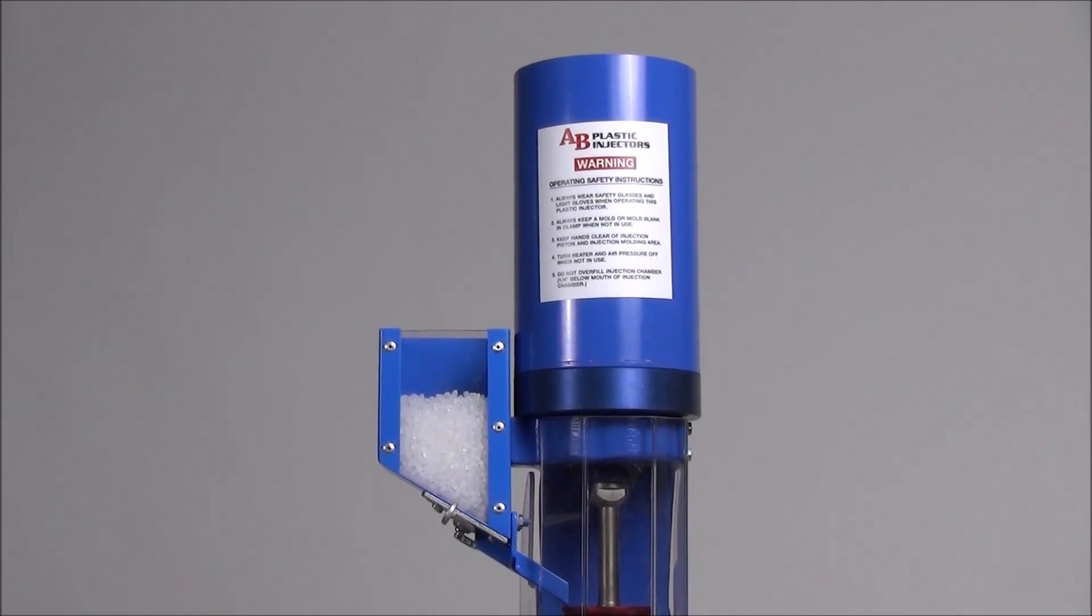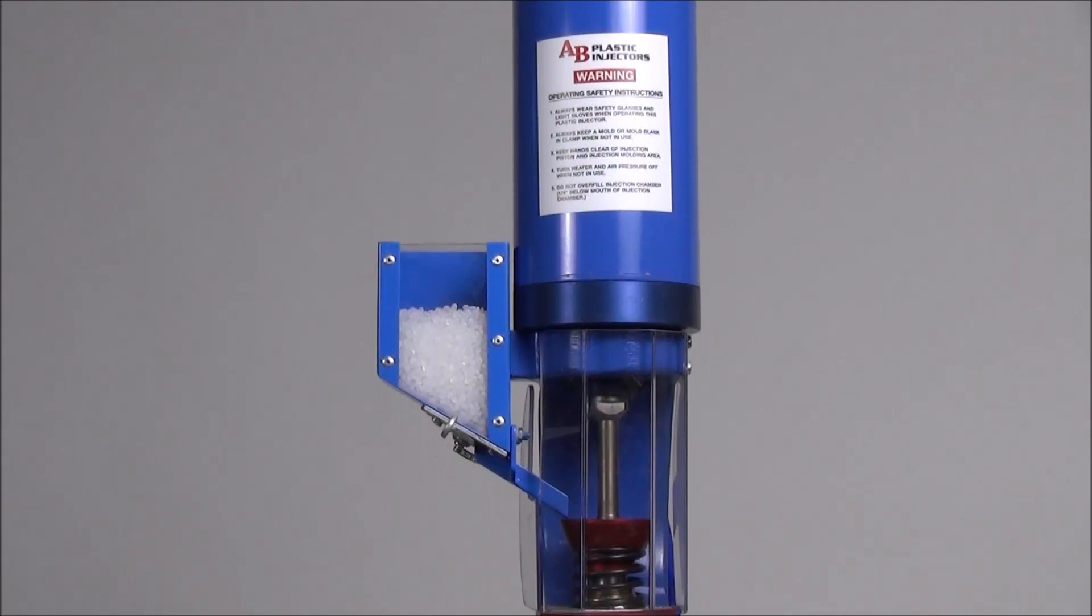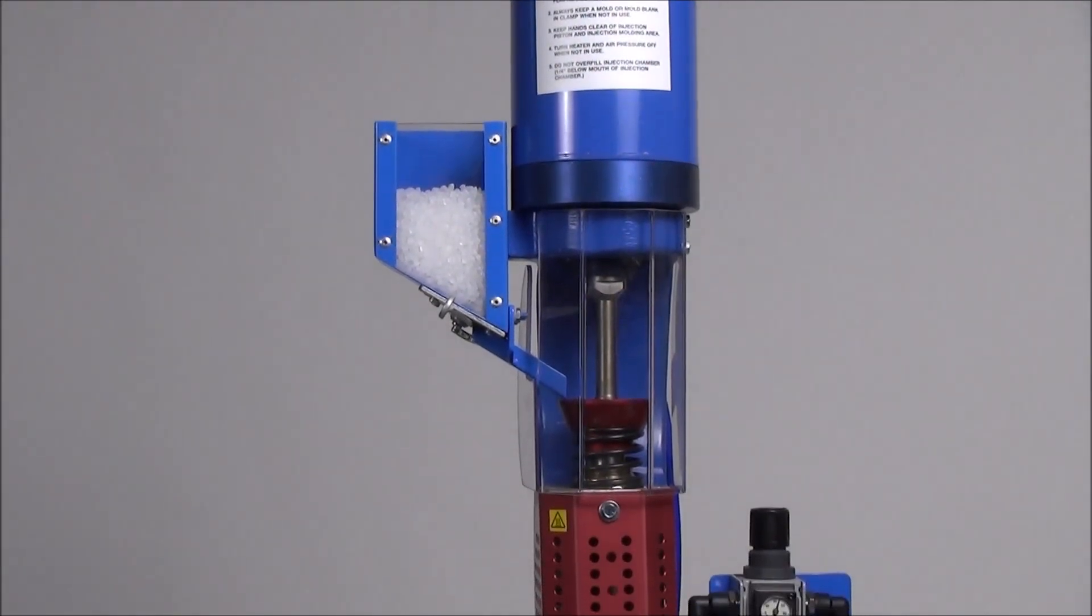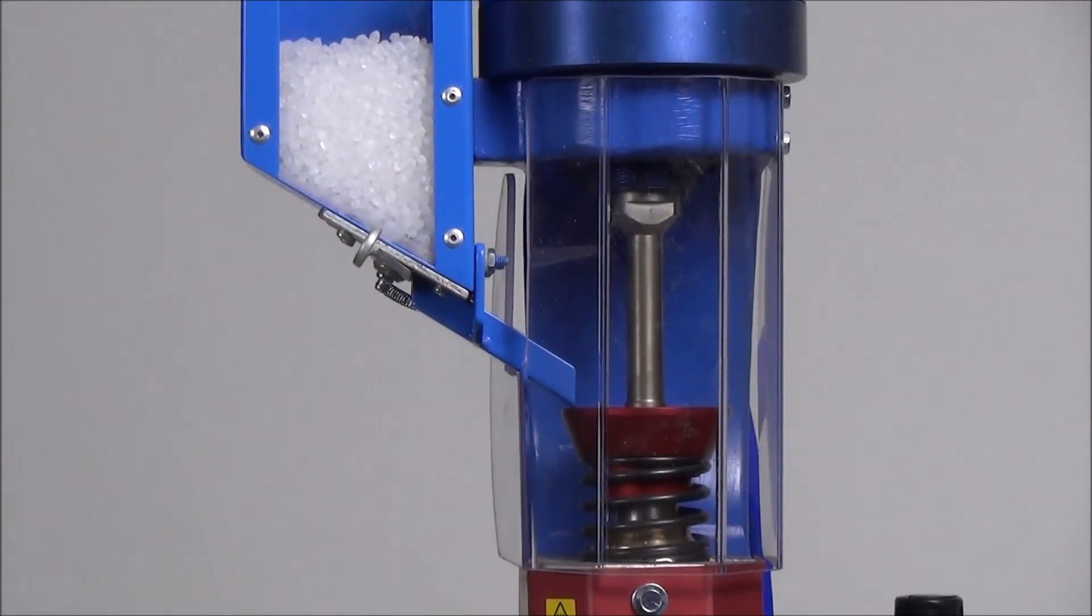Located to the left side is a material hopper. Directly underneath the injection cylinder and behind the transparent safety guard are the stainless steel piston and injection chamber funnel entrance.